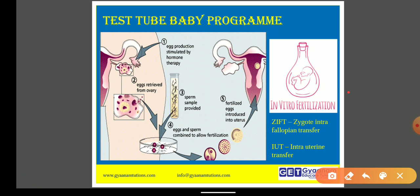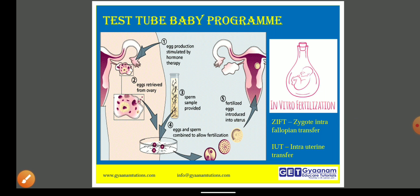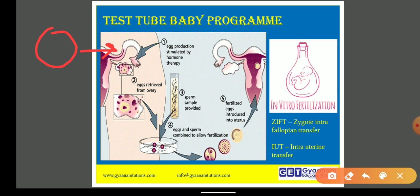The test tube baby program involves a technique known as in vitro fertilization. In vitro means inside the lab. Fertilization is the fusion of ovum and sperm to form a zygote. This fertilization takes place outside the body. The ovum is removed from the body surgically and then fused with the sperm outside the body in a culture dish.